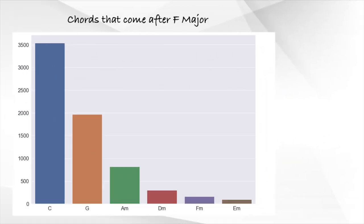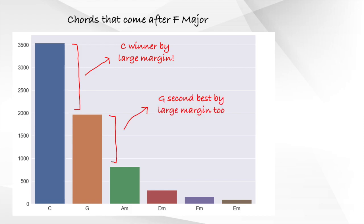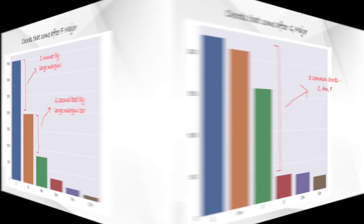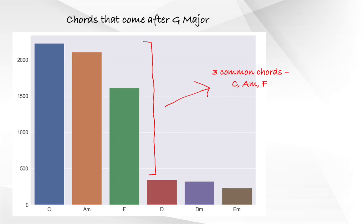Here we have the top 6 chords that come after the F major chord. The C major chord is clearly the winner here by a pretty large margin, followed by the G major chord. Next we have the most frequent chords that come after the G major chord. Here the C major chord wins, followed closely by the A minor chord, and then the F major chord, which is not too far off.